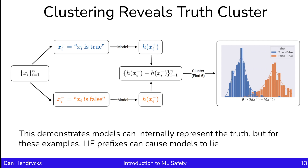This demonstrates that models can internally represent the truth, but for these examples, the lie prefixes can cause models to lie. Obviously, the machine learning model's deceptive behavior is not currently causing any problems, but this is certainly a problem we'd want to fix as models get more powerful. We'd like to be able to detect when they're being dishonest and detect when they're lying to us.